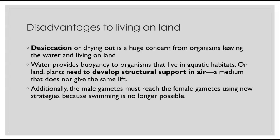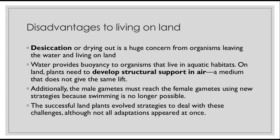Additionally, the male gametes — the sperm cells — must reach the female gametes, the egg cells, using new strategies because swimming is no longer possible. You can't swim in the air. The successful land plants are going to evolve strategies that deal with these challenges, but not all of those adaptations appear at once.